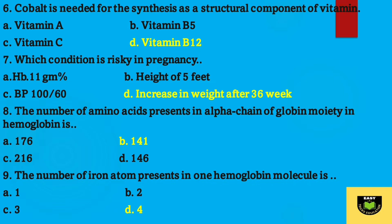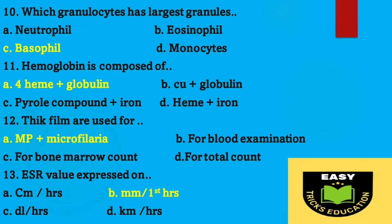Question number eight: the number of amino acids present in the alpha chain of the globin moiety in hemoglobin — correct answer is option B, 141. Question number nine: the number of iron atoms present in one hemoglobin molecule is — option D, four, is the correct answer.